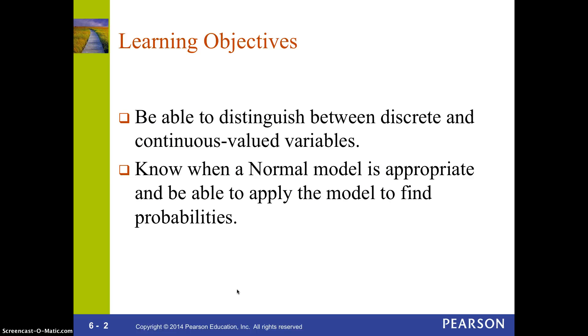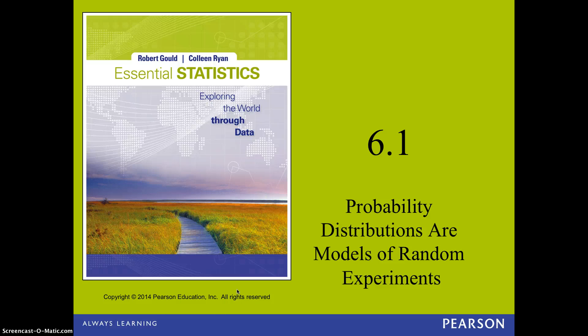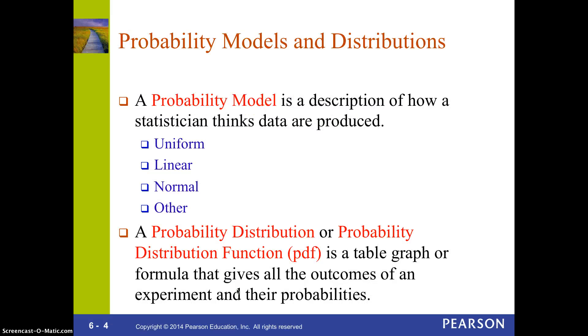We're also talking about the difference between a discrete and a continuous variable. Probability models come in several forms. We're mostly going to spend a little bit of time on the uniform distribution. That's mostly to help us understand the normal distribution better. But they can have all kinds of shapes. We're going to talk about a probability distribution function, and it's either a table or a graph that gives all the outcomes of an experiment and what their probabilities are.